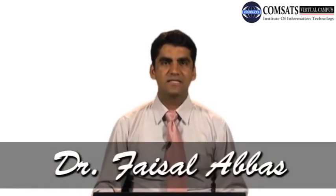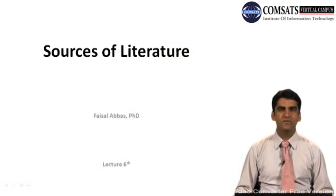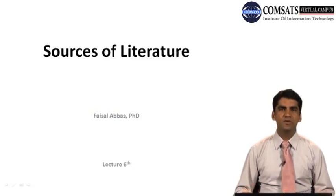Bismillahirrahmanirrahim. Today we are in our sixth lecture of our research methodology lecture series. In these lectures we are talking about review of literature: how we do it, why we do it, what is the importance of reviewing literature, what help we get from the literature we review, how to do it critically, what kind of contents we need when we write our literature review, and what are the sources of literature review. Today we are talking about sources of literature — where do we get the already published material, where do we get journal articles, where do we get book chapters that are relevant to our research questions and objectives.